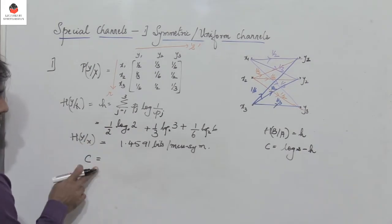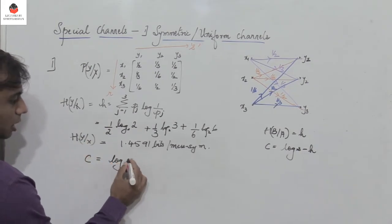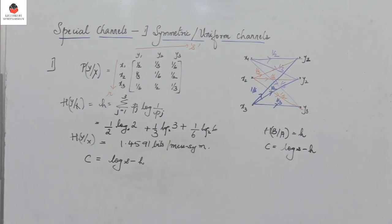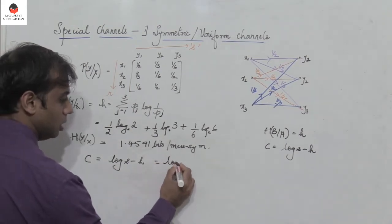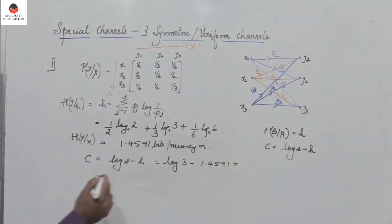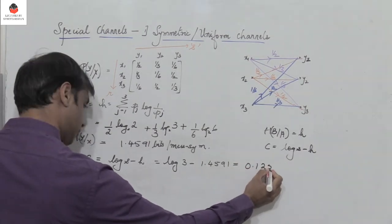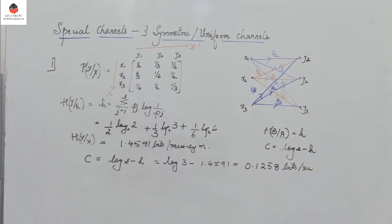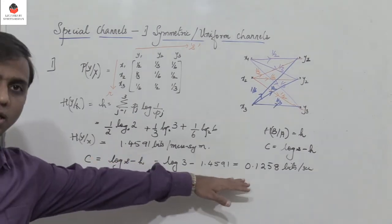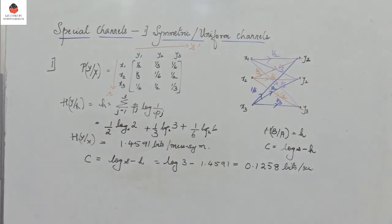Next we find the channel capacity. Channel capacity is log s to base 2 minus h. Here s is the number of output symbols, which is 3. So c equals log 3 to base 2 minus 1.4591, giving c equal to 0.1258 bits per second, assuming a symbol rate of 1 message symbol per second. Make sure you do the calculations correctly in log base 2.